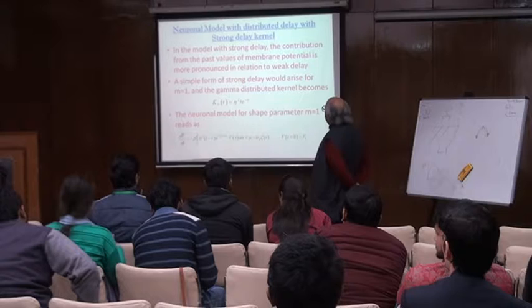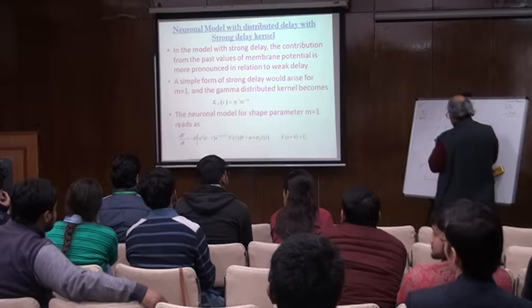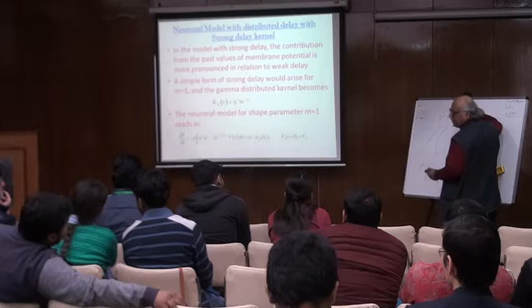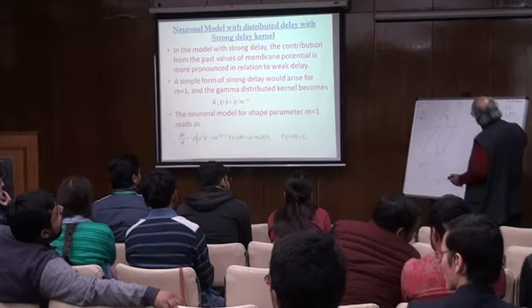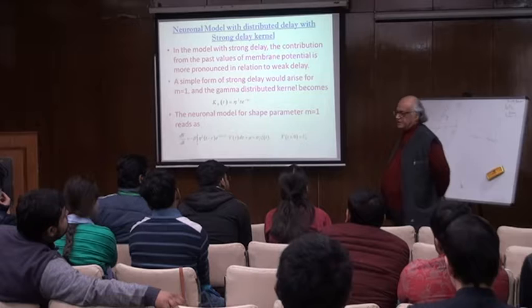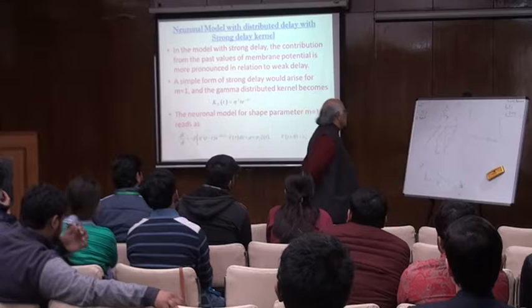Earlier we were saying that all the contribution is coming from — the memory is this — immediately whatever happens, from this maximum. But now you are saying it is not coming from time zero, but it will come from something from a past period. There is, for example, a cold — there is a time delay of seven days; you don't immediately get cold. So there is always a time delay. Those are delayed effects, and this is called strong delay.